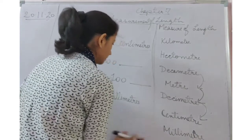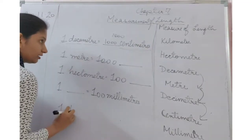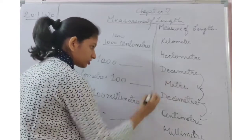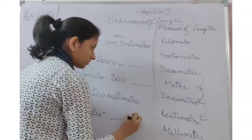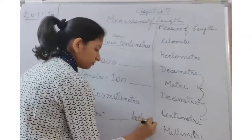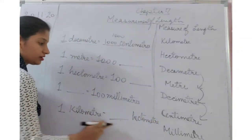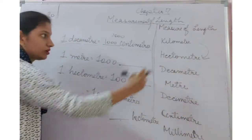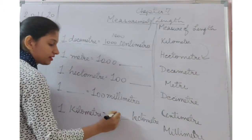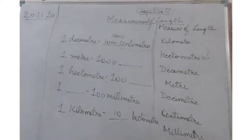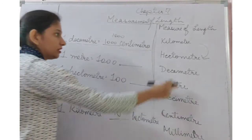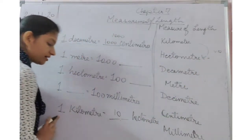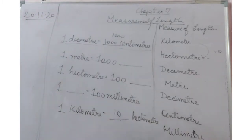Let's take another example. Say 1 kilometer equals how many hectometers? You are going from kilometer to hectometer — that is only 1 step down. So multiply by 10. 1 × 10 = 10. So 1 kilometer equals 10 hectometers.